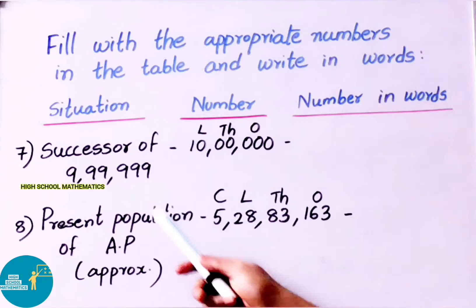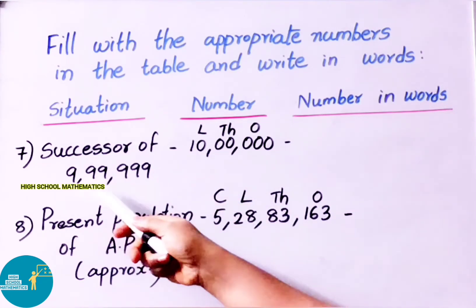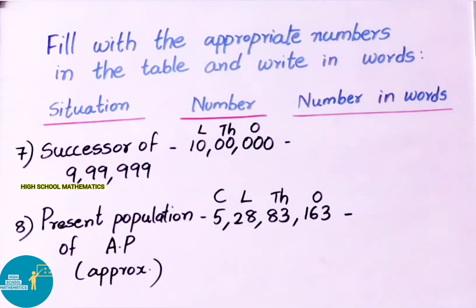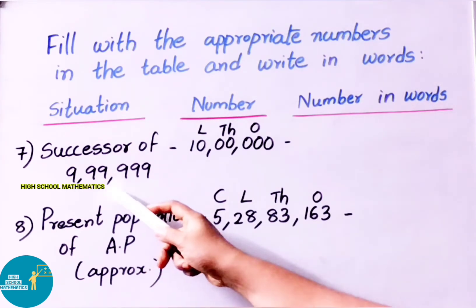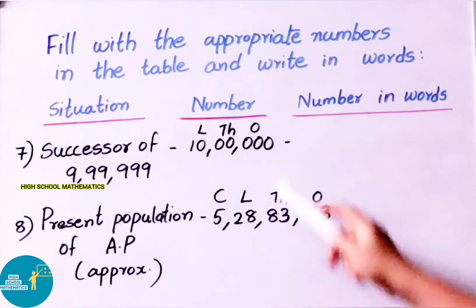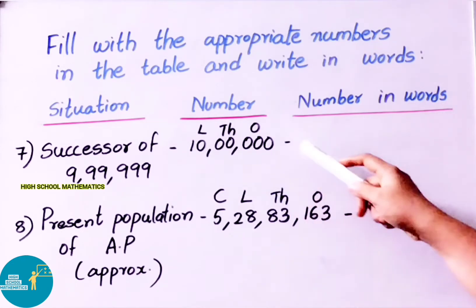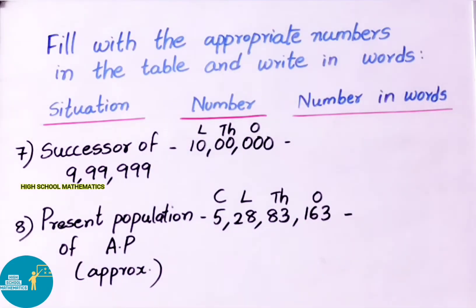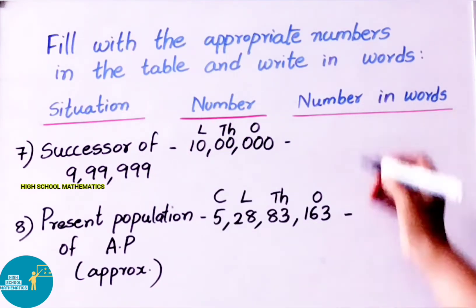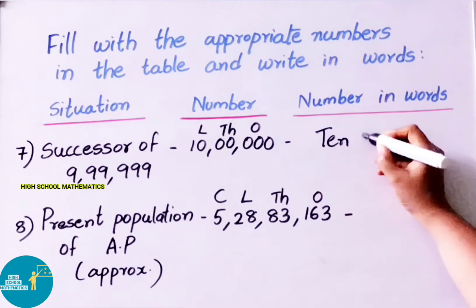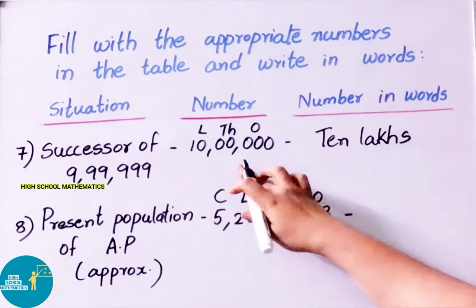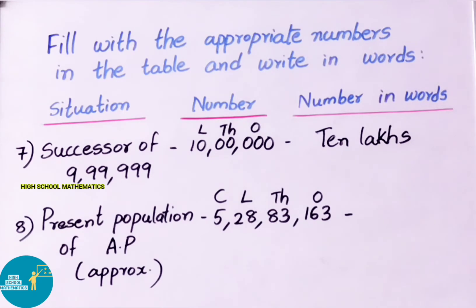Next question: successor of 9,99,999. The successor is the number that comes after. The successor of 9,99,999 is obtained by adding 1, which gives 10,00,000. The number name is ten lakhs. We write this with ones period, thousands period, and lakhs period — with 10 in the lakhs place and zeros in all other places.